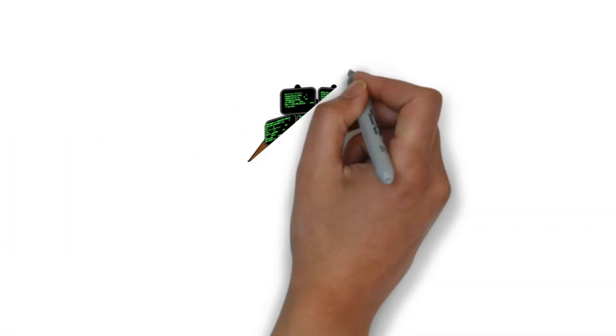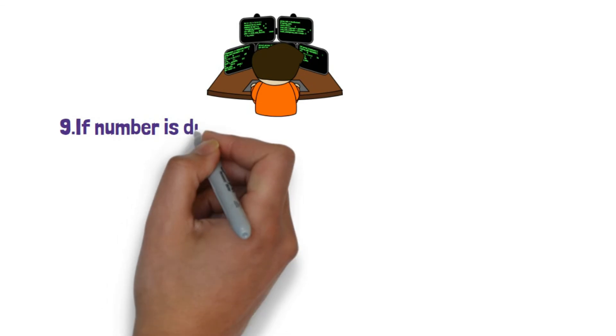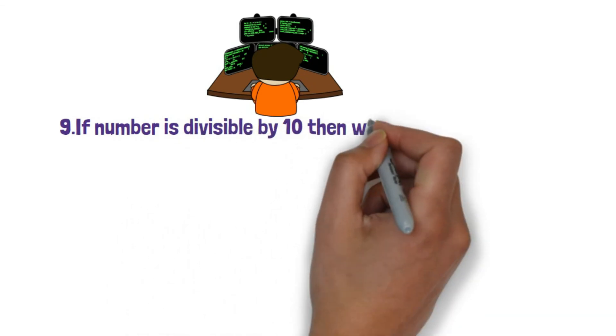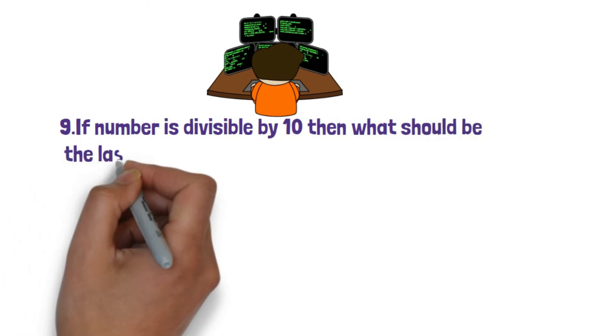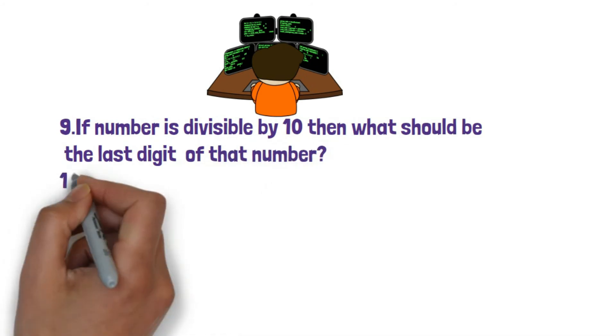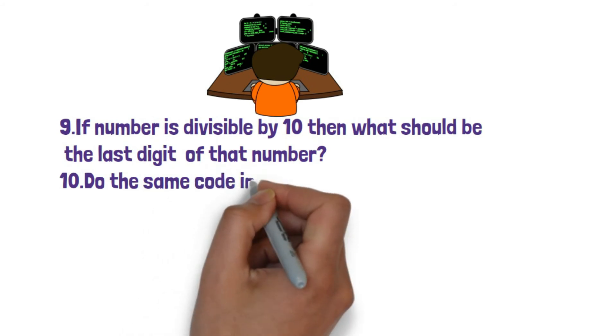Question number nine was, if any number is divisible by 10, then what should be the last digit of that number? Obviously it will be zero. Question number 10 was, he told him to write the same code in Python. He has written in Java and now he is asking him to type the same code in Python.